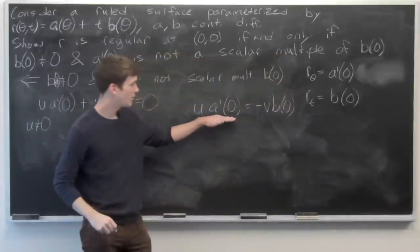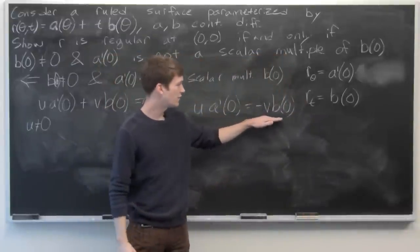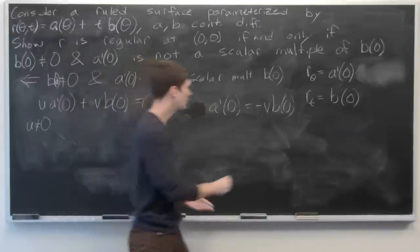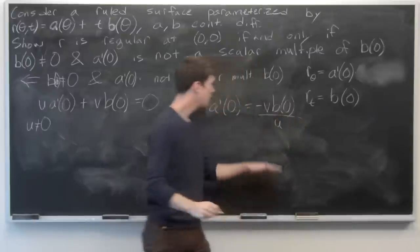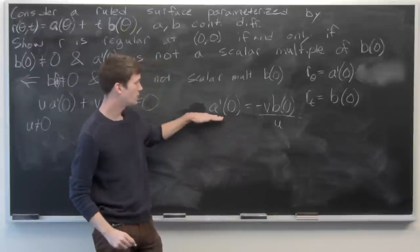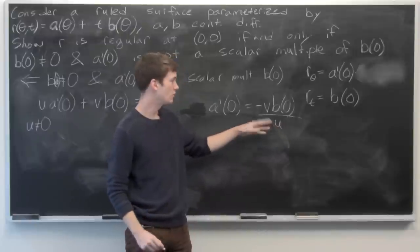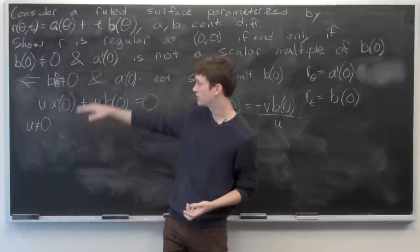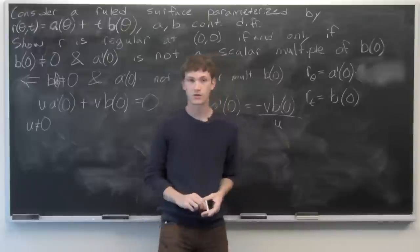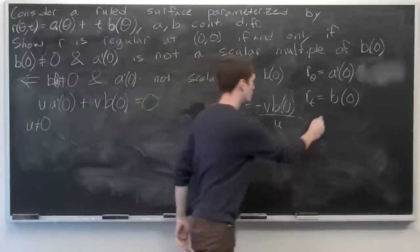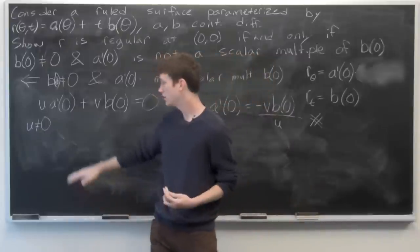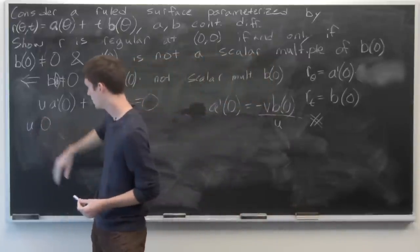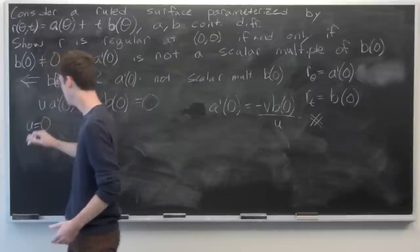We get u·a′(0) = -v·b(0). Since u ≠ 0, we can divide both sides by u, giving a′(0) = (-v/u)·b(0), meaning a′(0) is a scalar multiple of b(0). But that contradicts our assumption, so u ≠ 0 is false, meaning u = 0.